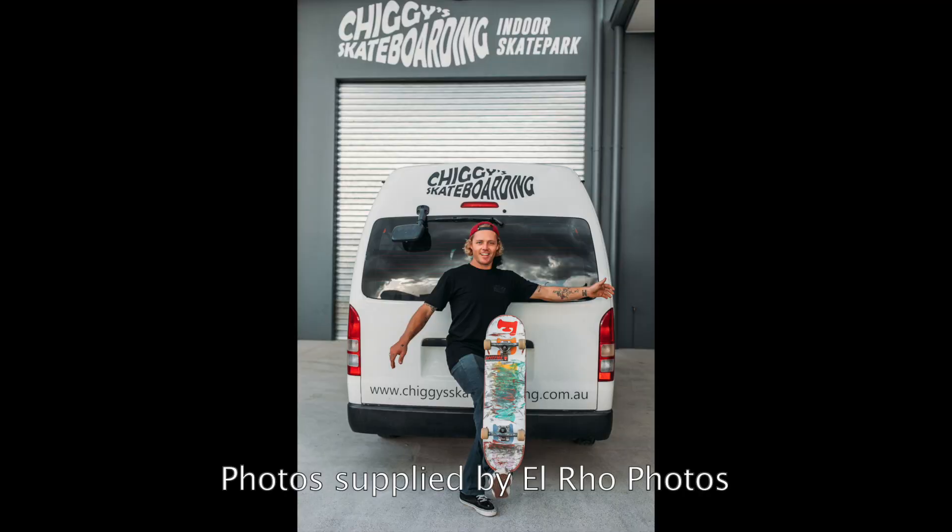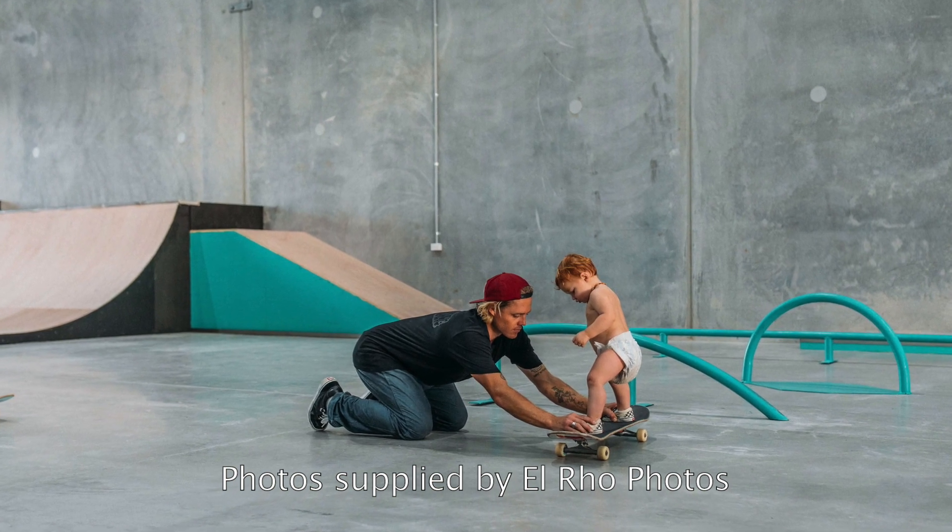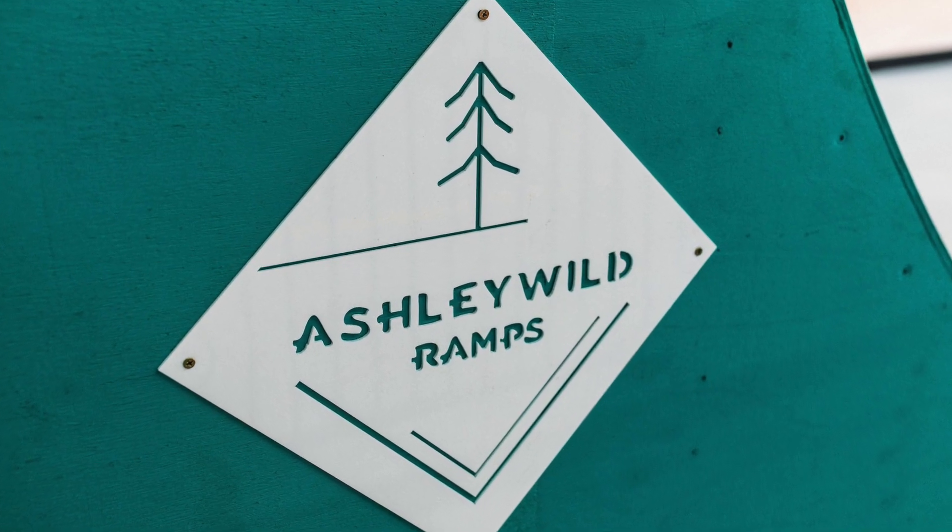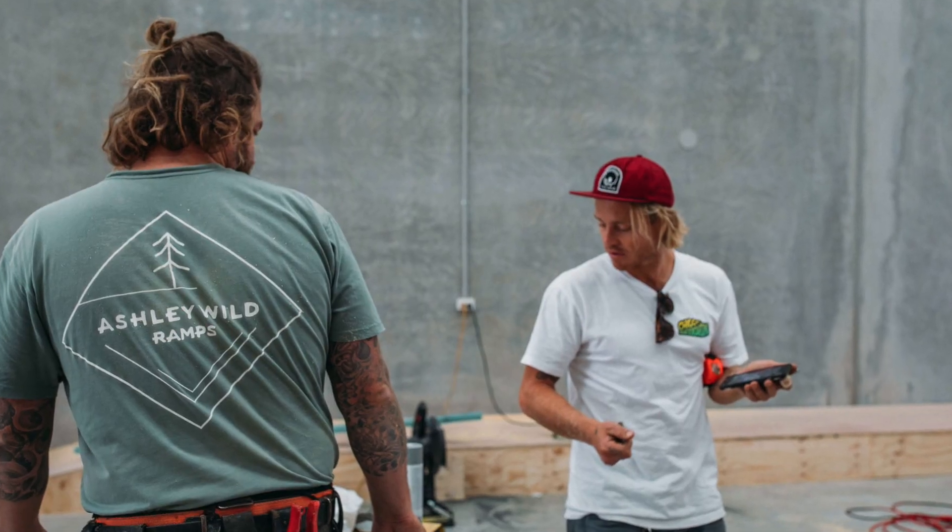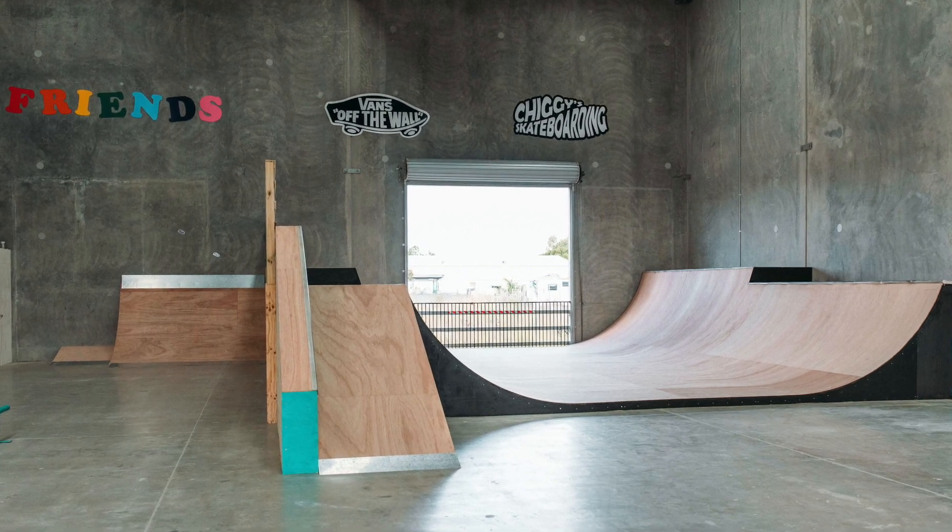Meet Chiggy, who owns a skate park on the Sunshine Coast. Chiggy loves to teach, so he designed his own skate park. He asked his mate from the amazing Ashley Wild Ramps to help with the build. This is the mighty halfpipe that he designed and made. How much fun does it look?